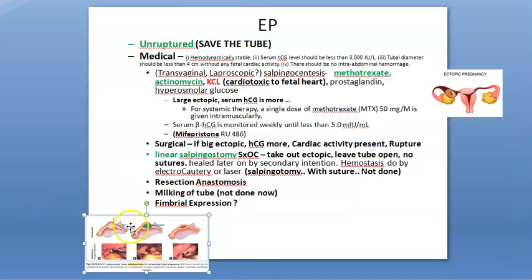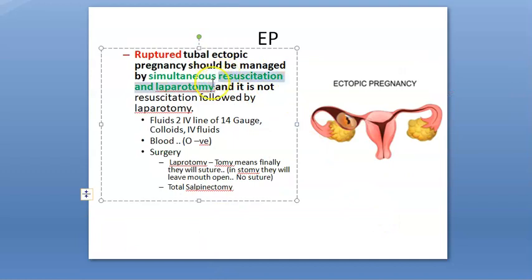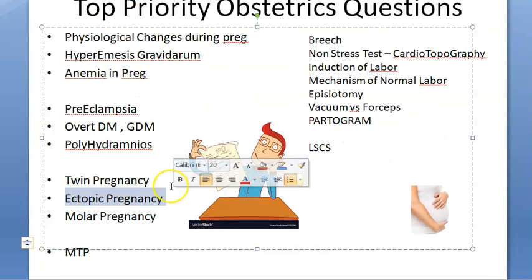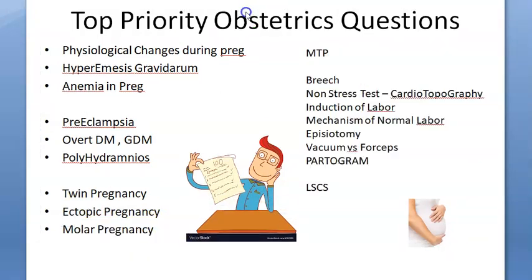If the tube has ruptured, do simultaneous resuscitation and laparotomy. You can suture or perform salpingectomy — remove the fallopian tube if you cannot save it.